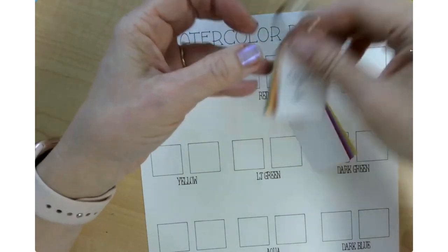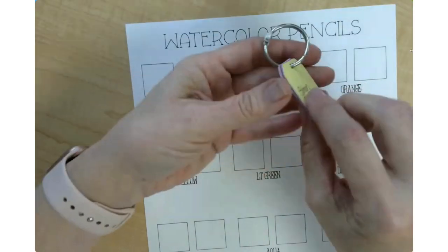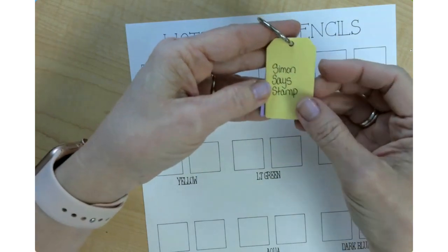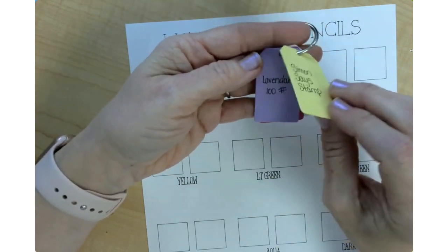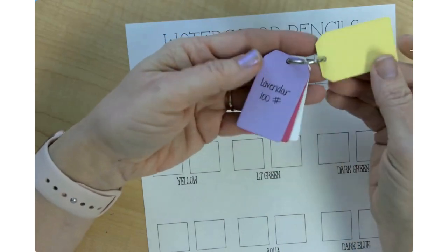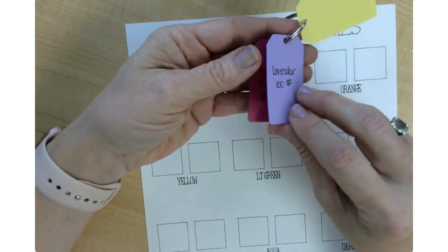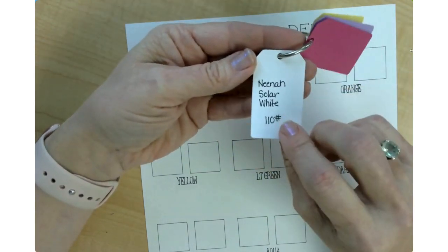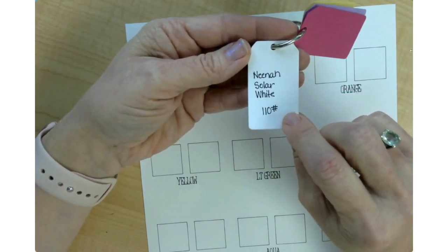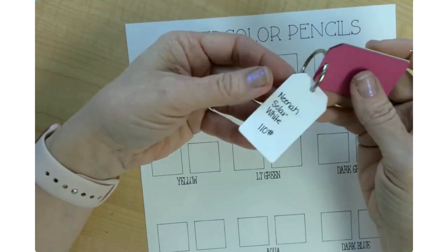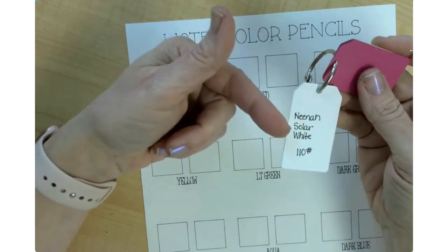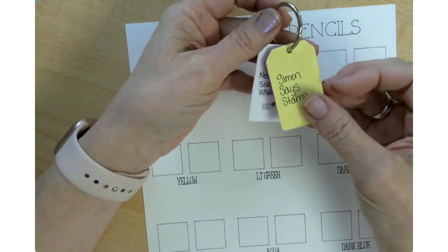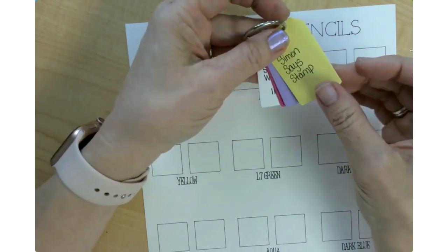Then I have a few colors from Simon Says Stamp, so this is just the cover for that. I have the lavender in 110 or 100 pound, doll pink, and then this is actually the Neenah solar white in 110. I didn't want to just have one tag on a binder ring, so I threw that in here with my Simon Says Stamp cardstock.